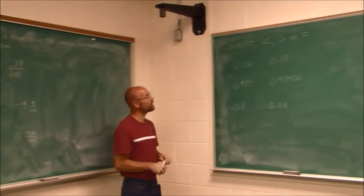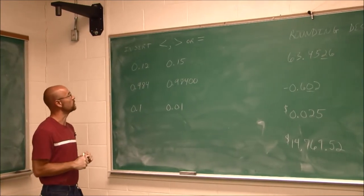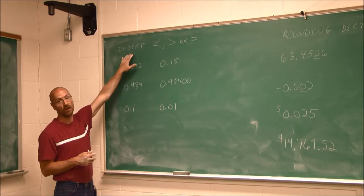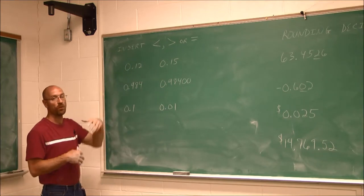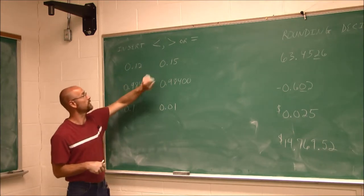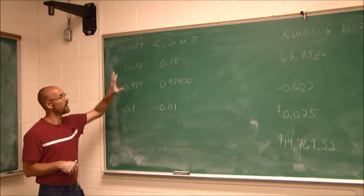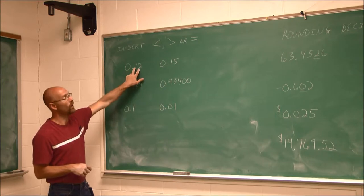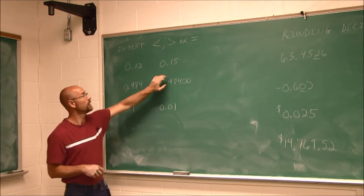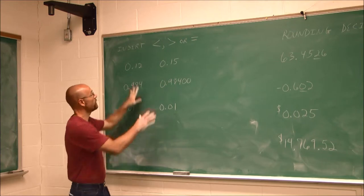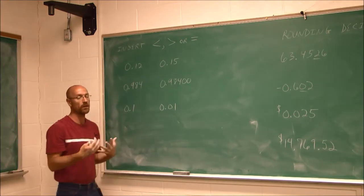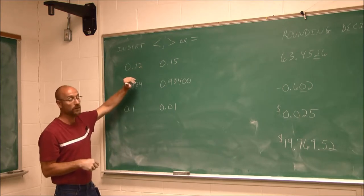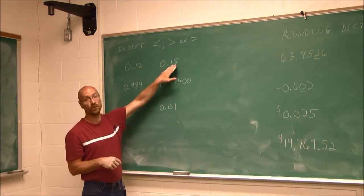Now let's insert some inequalities. We've worked with inequalities before when we talked about integers, and now that we're dealing with decimals, we're going to reapply that same concept. Here I have 12 one-hundredths and 15 one-hundredths — they're both in the hundredths. We want to determine what is smaller and what is greater.